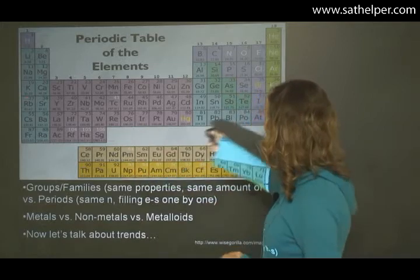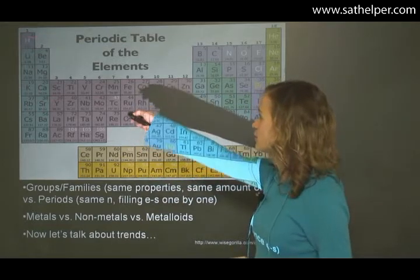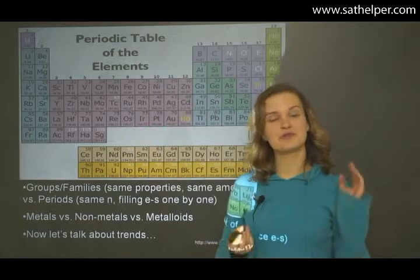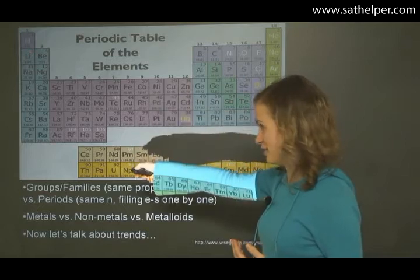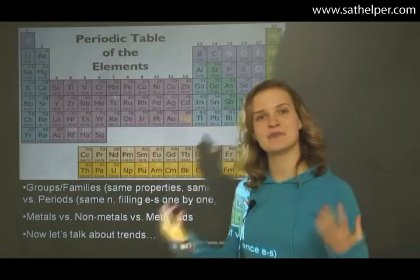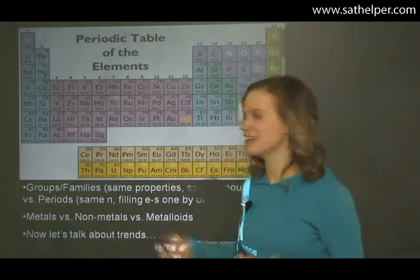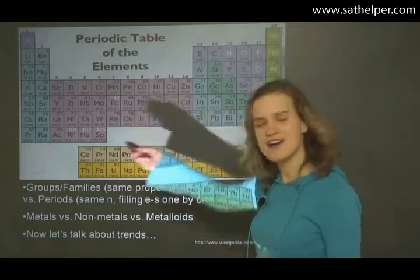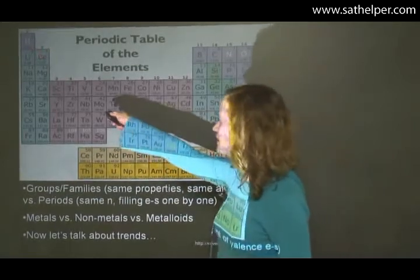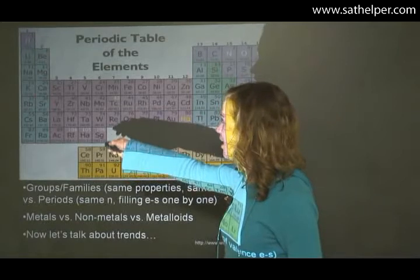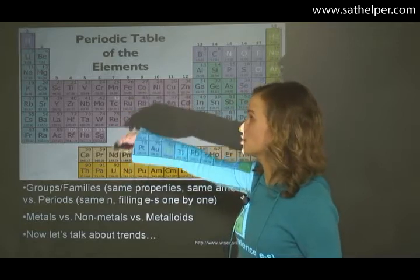The periods are the rows that go across, and groups are the columns that go down. They're also sometimes called families. The reason that groups are called families is because elements in one group all have the same kind of bonding character. That is because the elements in one group have pretty much the exact same electron configuration. All of these have two electrons in the S block, with different varying principal energy levels.